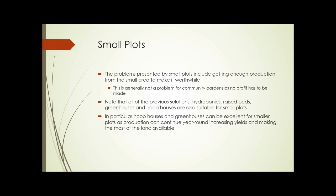Small plots. The problems presented by small plots include getting enough production from a small area to make it worthwhile. In a community garden, that's generally not a problem as we don't have to make a profit — we're providing a service to the community. All of the solutions discussed so far — hydroponics, raised beds, aquaponics, greenhouses, and hoop houses — are suitable for small plots. In particular, hoop houses and greenhouses can be excellent for smaller plots because production can continue year-round, increasing yields and making the most dollars per square foot because we can grow 12 months out of the year.